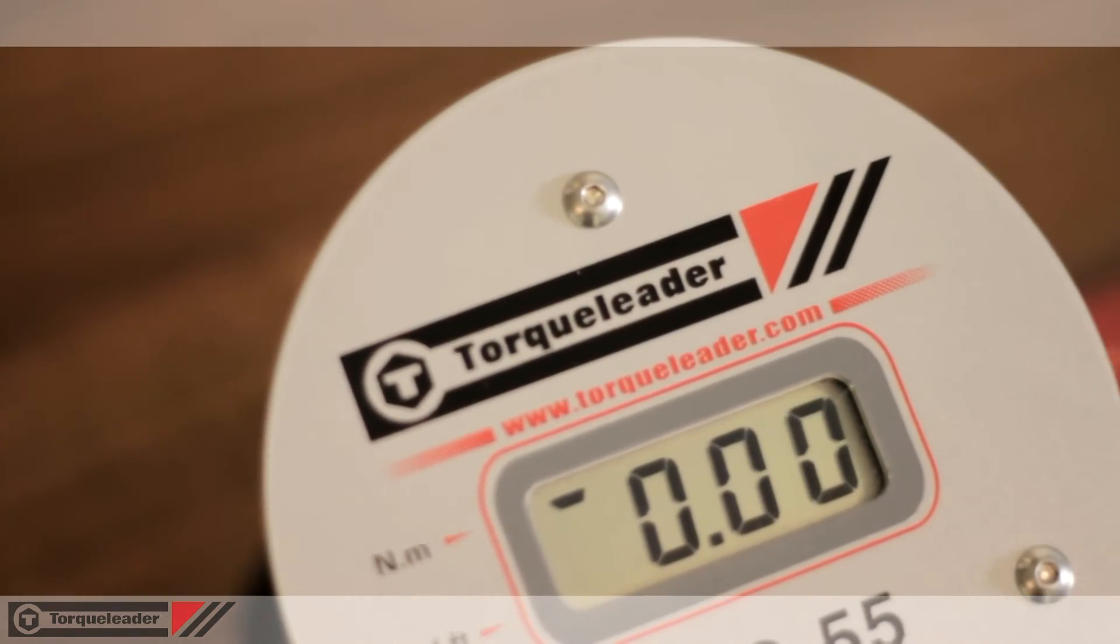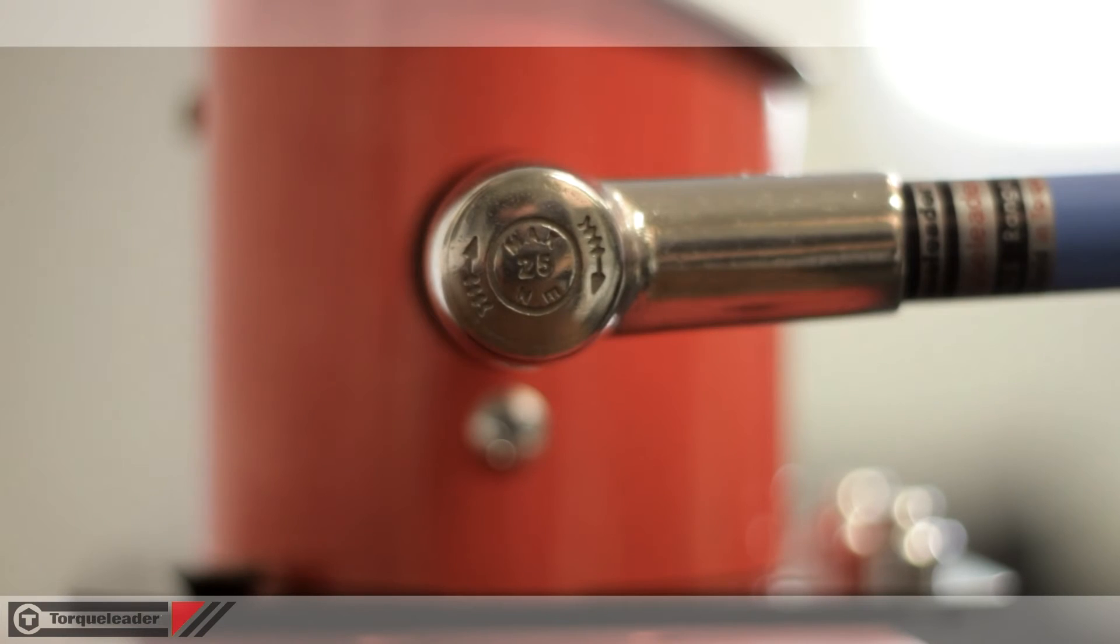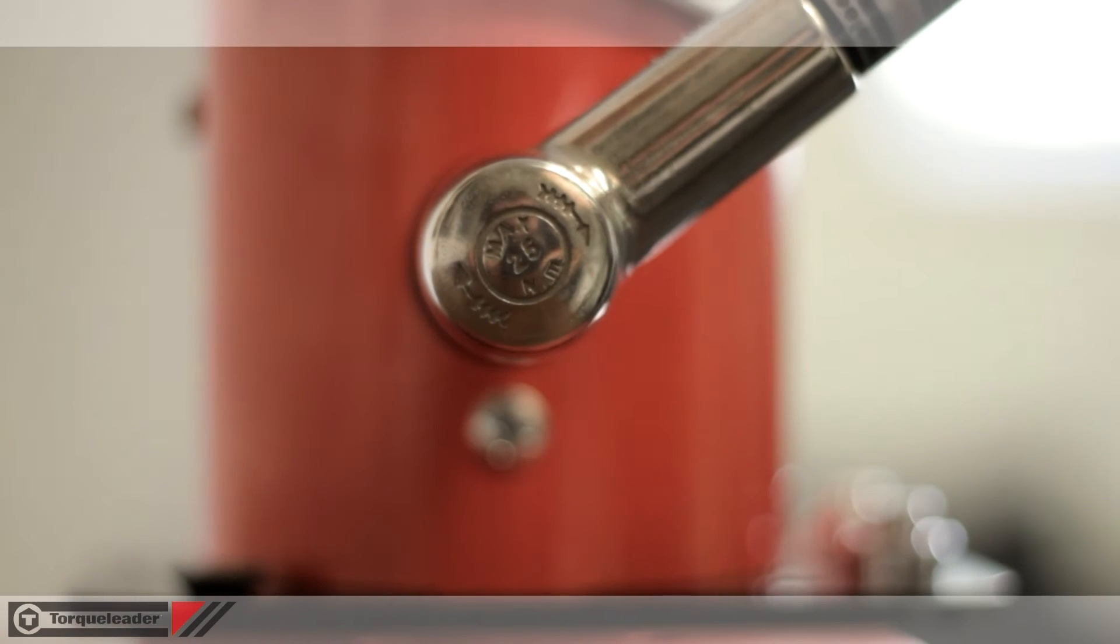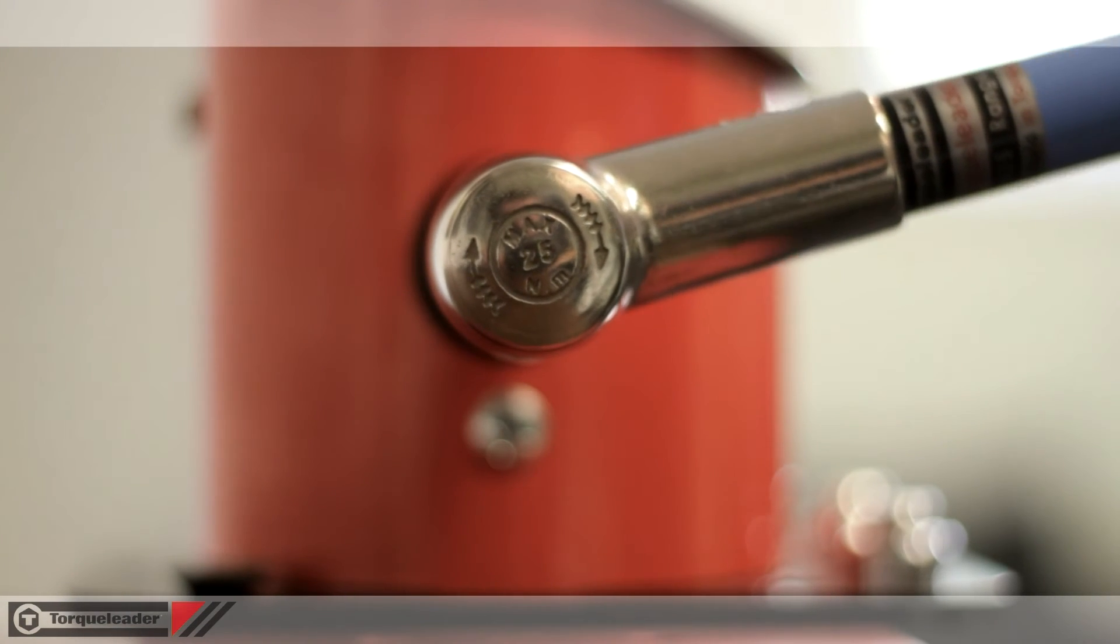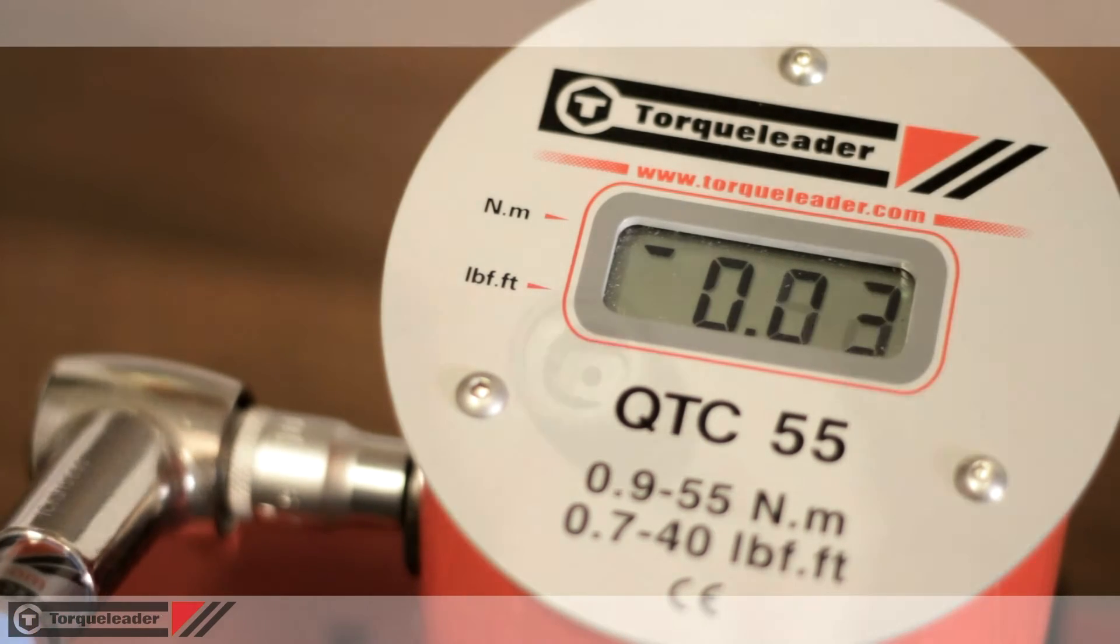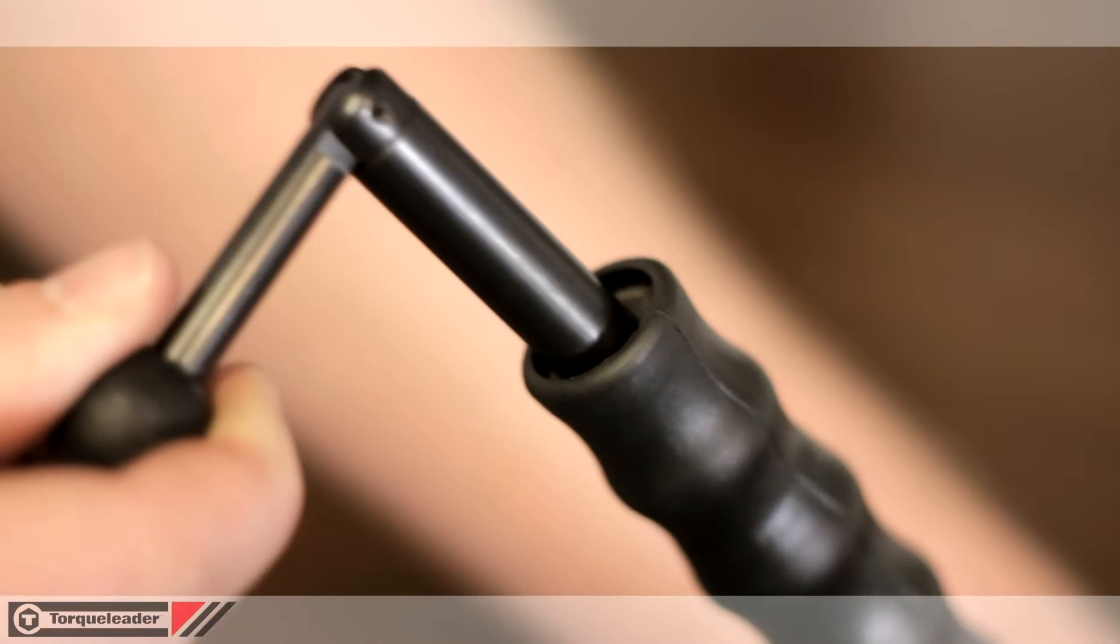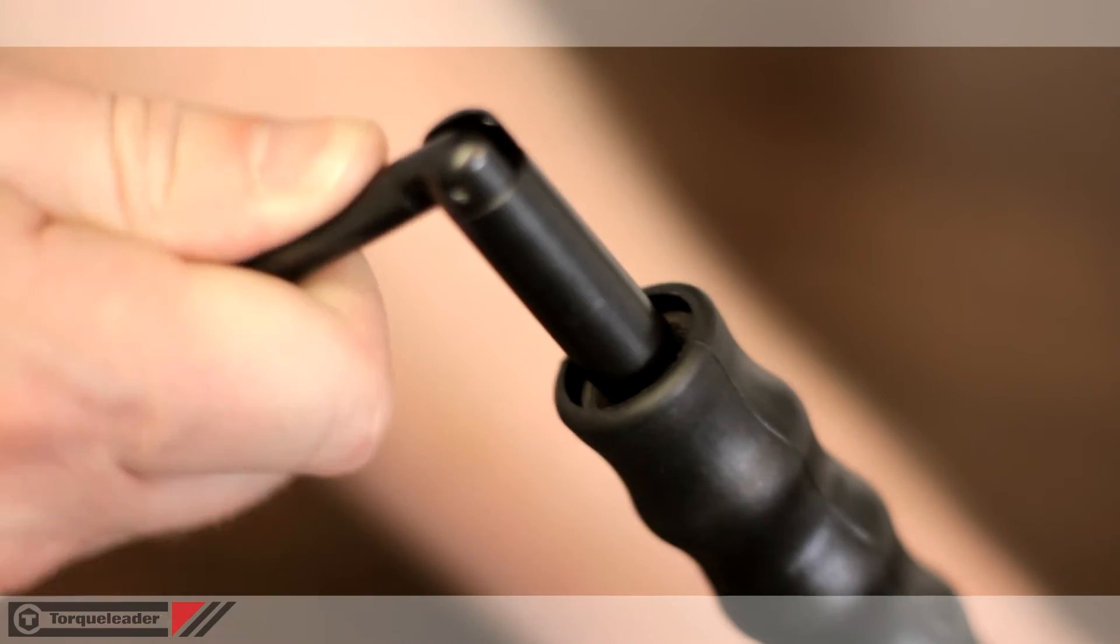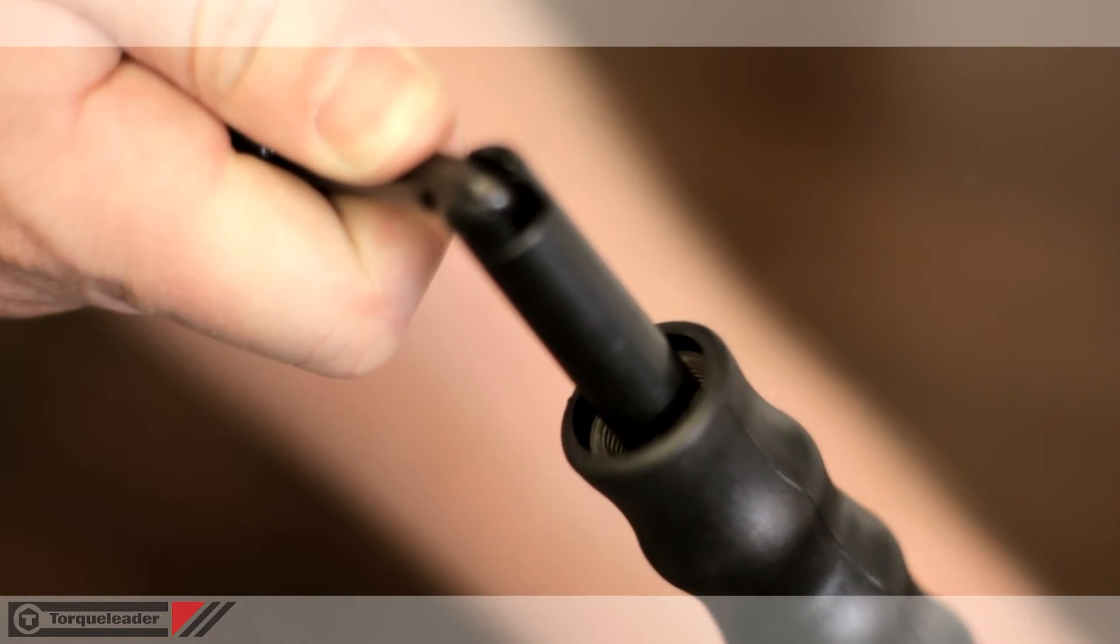TSP and TSN wrenches are pre-set type torque tools. They must be set to the required value using a torque analyzer, like the QTC shown here. Adjustment is made using the adjusting key at the end of the handle. All tools feature a locking mechanism to prevent accidental adjustments.